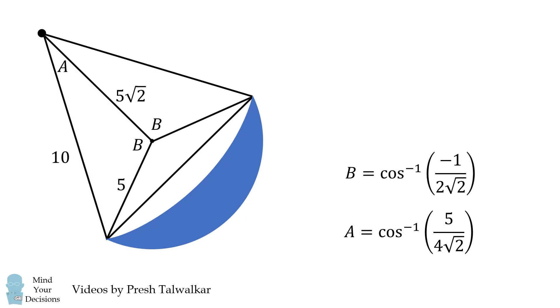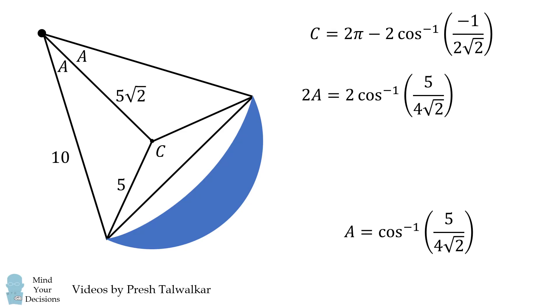Now, notice that by symmetry, this is also angle b. So this will be c, which is equal to 2pi minus 2b. We'll calculate the angle c. Again, by symmetry, this is angle a, so we can solve for the value of 2a.